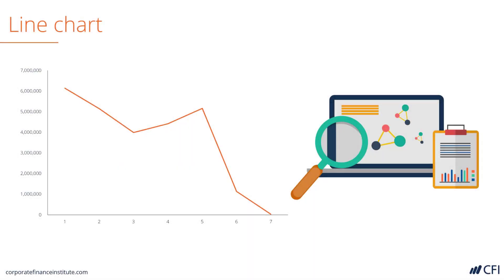A line chart is one of the most common and classic types of charts that you can use. It's great for showing a trend and it's great for showing a single series of data. Imagine that this is graphing on the vertical axis the company's cash balance and on the horizontal axis the months of the year. As you can see, over time this company is burning money and it's going down to zero by month seven. The line chart makes this point crystal clear.